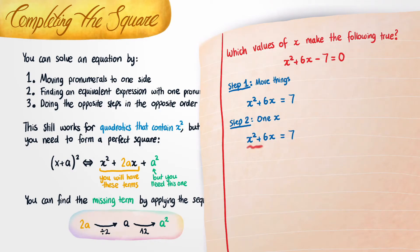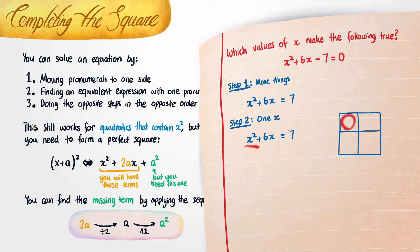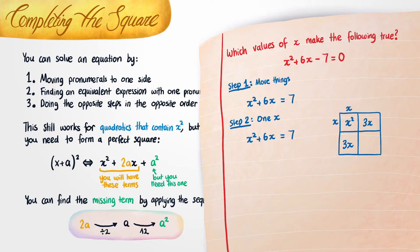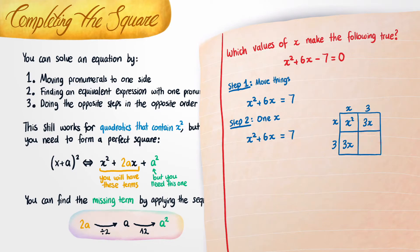To find the term I need to complete this square, I opt to actually draw the square. The first term — the x squared — fits here. The 6x can be broken up into two parts: 3x over here and 3x over here. To make x squared we multiply x by x. To make this 3x, we multiply x by the number 3, and that means this number down here is also 3. So this missing square is what you get when you multiply 3 by 3, which is 9. That means if we see x squared plus 3x plus 3x plus 9, we can replace that with (x + 3) all squared.